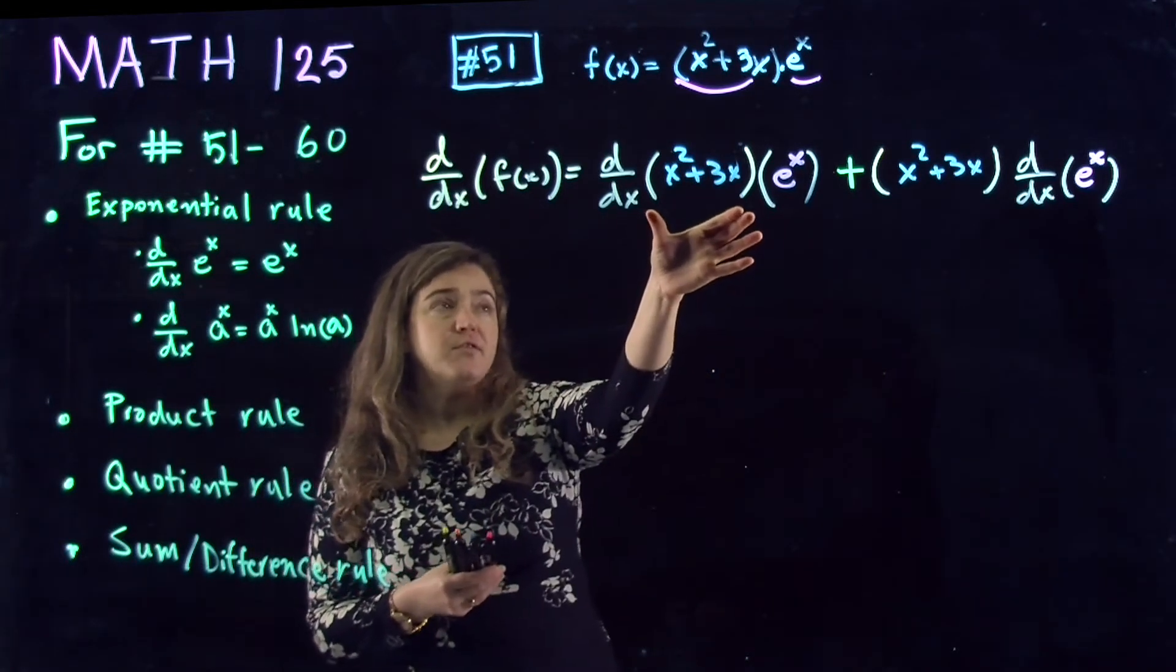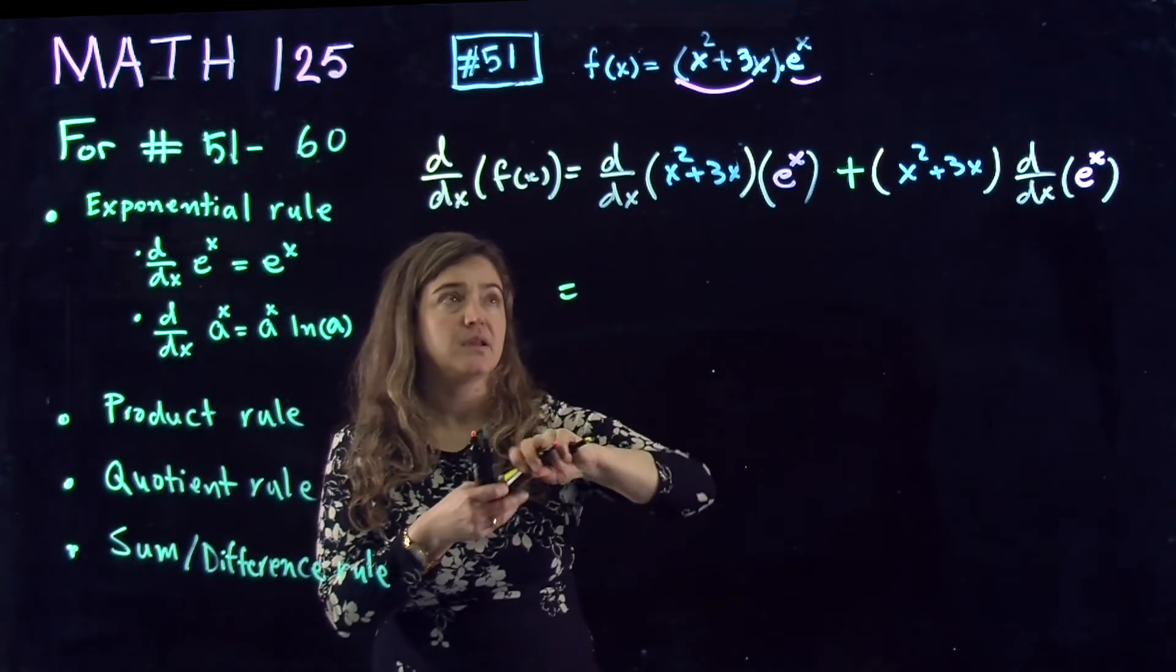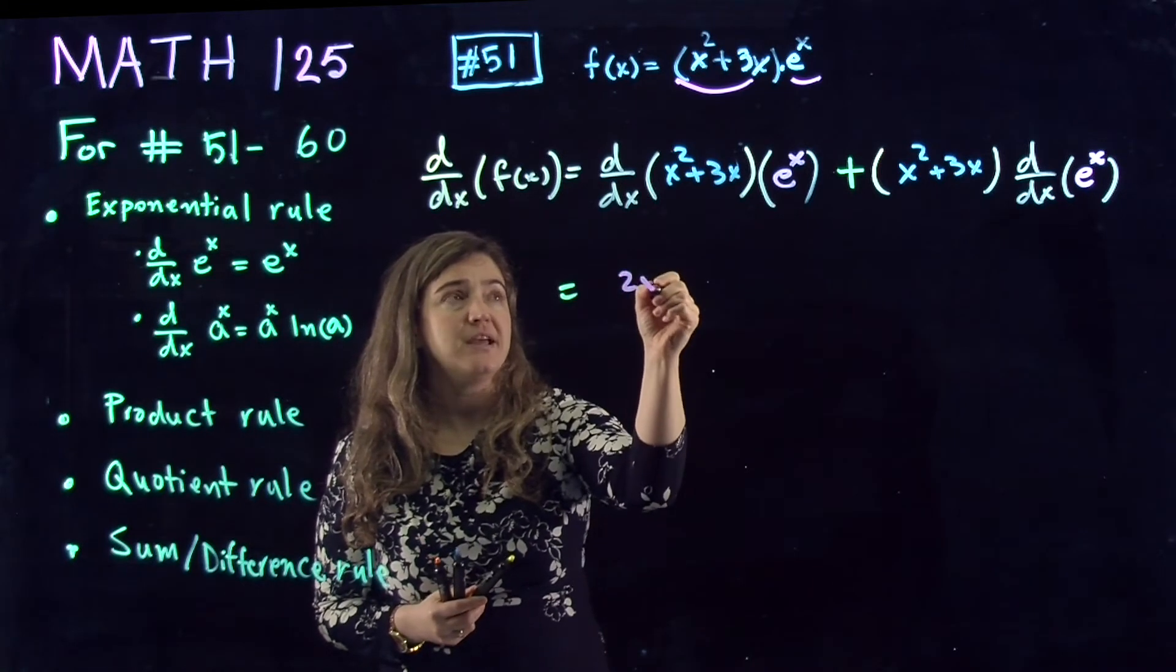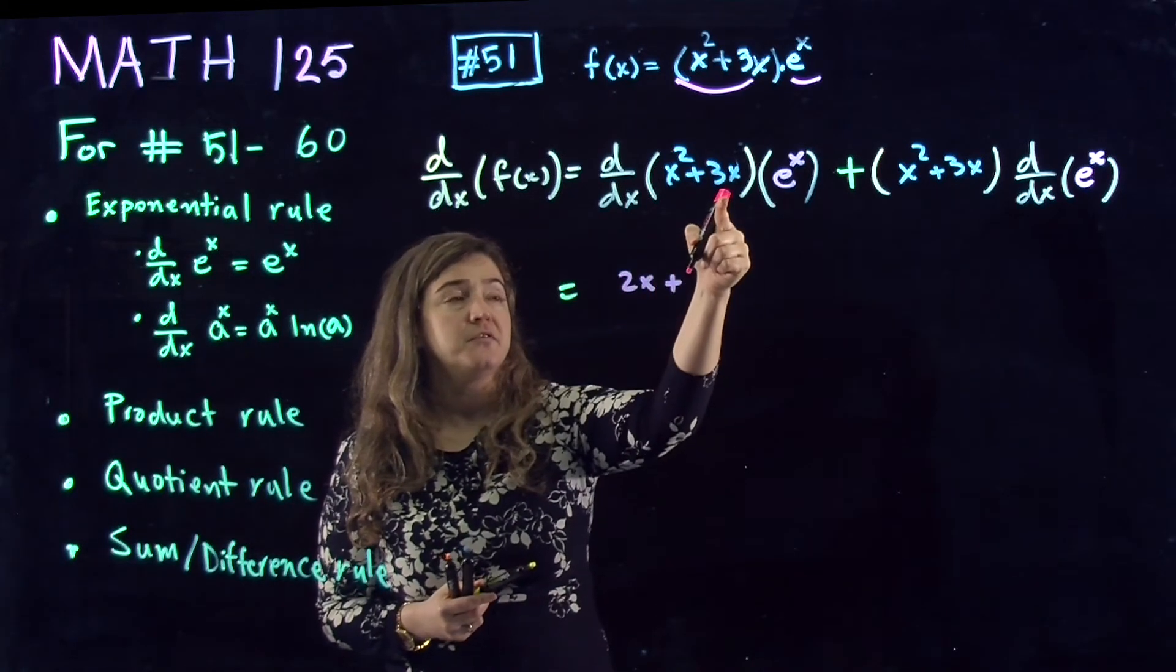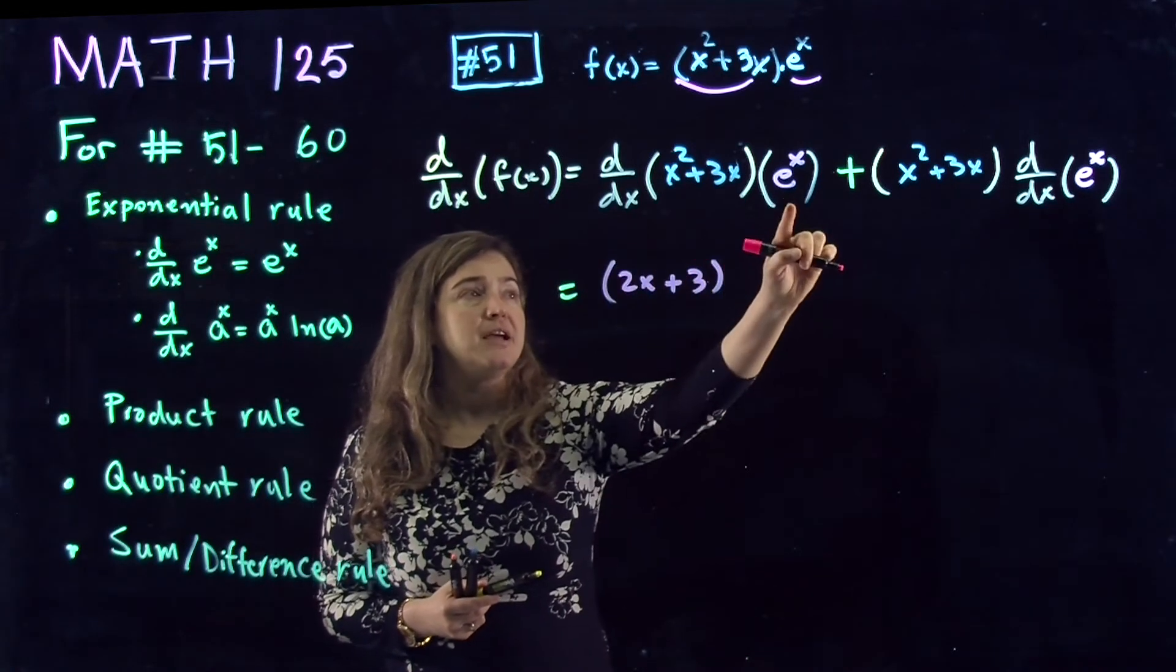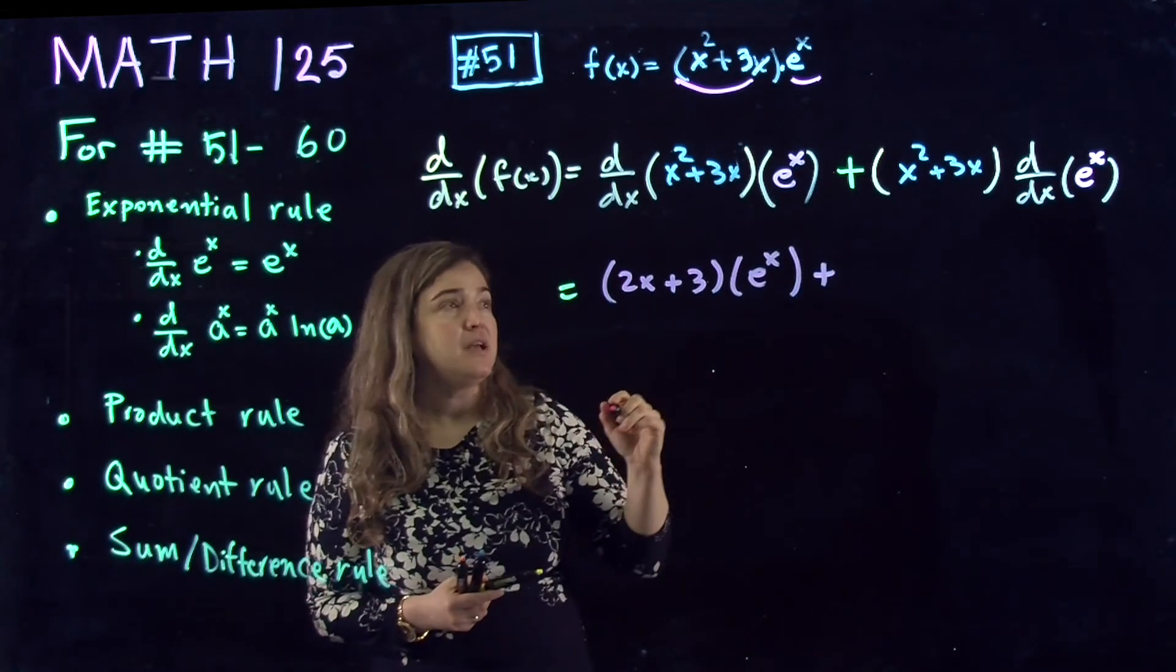Now, the derivative of the first function is going to be the derivative of x squared, which is 2x, plus the derivative of 3x, which is 3, multiplied by the second function and a plus sign between them.